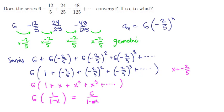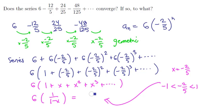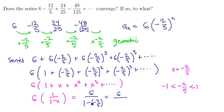So we have 6 times 1 over 1 minus x. Notice that negative two-fifths is between 1 and minus 1, so it's inside the radius of convergence. Back-substituting gives us 6 over 1 minus negative two-fifths, which simplifies to 6 over 1 plus two-fifths, or 6 over seven-fifths, which equals 30 sevenths. And so that's the sum of the series, by recognizing it as a geometric series.